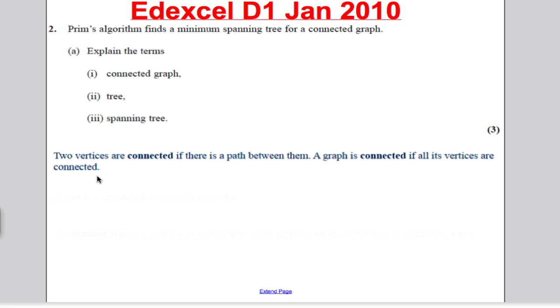I would write this: Two vertices are connected if there is a path between them. A graph is connected if all its vertices are connected. Two points are required—to explain what connection is and then to say a graph is connected if all its vertices are connected. This is straight from the D1 glossary.